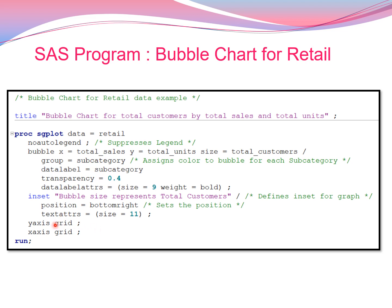You can use text attributes such as size equal to 11 to control the size, and weight equal to bold to make the text bold. Then I'll use yaxis with the grid option and xaxis with the grid option, which specifies gridlines at the major tick marks in the chart.